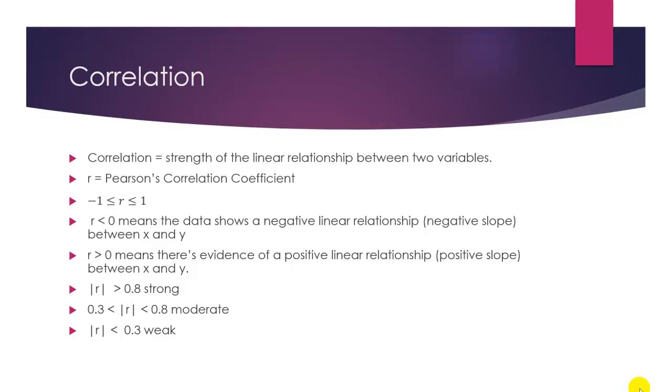These are arbitrary cutoff values, but we need to say something. So, we'll say that if the r value is between 0.3 and 0.8 or negative 0.3 and negative 0.8, if the r value is negative, we say this relationship is moderate. So, there would be a moderate linear relationship between x and y.